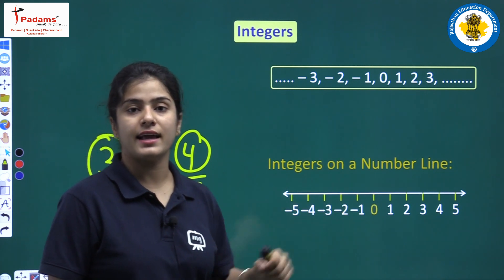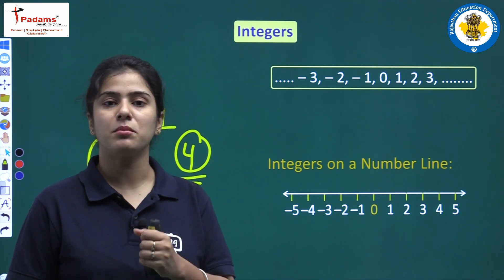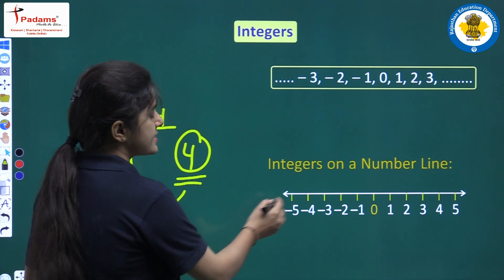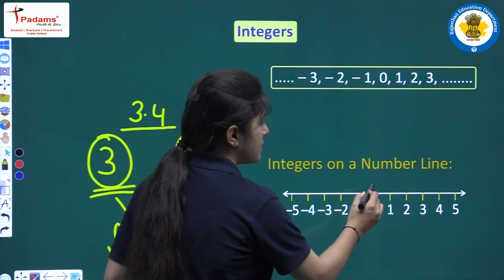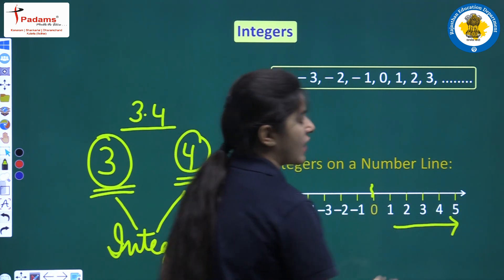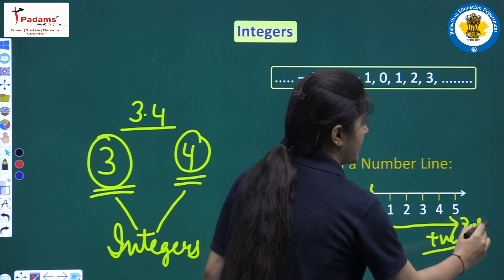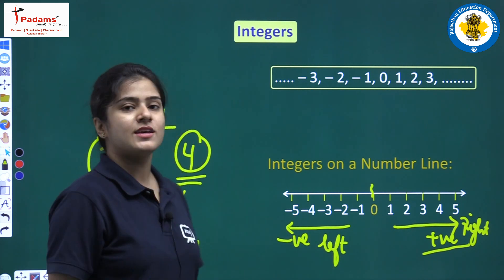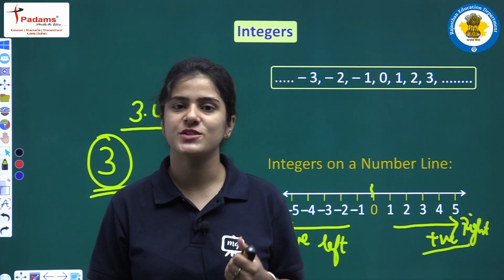Next, integers on a number line — how can we represent integers on a number line? A number line is a line on which we can represent various numbers. On this number line we can represent the integers: zero in the middle, then 1, 2, 3, 4, 5 moving towards the right — those are positive numbers. Negative integers are on the left side of the number line.